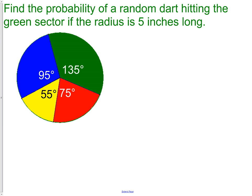Find the probability of a random dart hitting the green sector if the radius is 5 inches long. That's a pretty simple and straightforward question. We could ask the exact same question for the red, blue, or yellow sector — the only thing that's going to change is N. Instead of using 135, we'd use 75, 55, or 90.